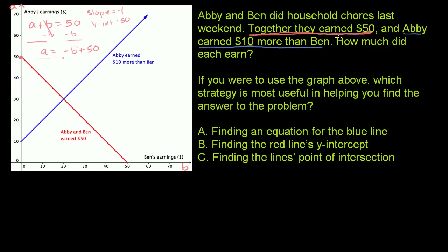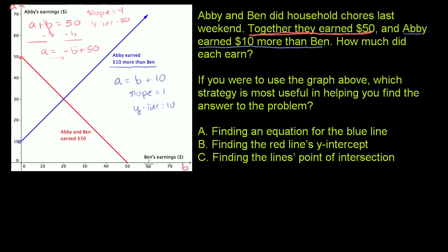Now the second statement: Abby earned $10 more than Ben. If we write that, that's saying Abby equals Ben's earnings plus $10. Here the slope is equal to 1 — there's an implicit 1 multiplying B — and the y-intercept is 10. They graph that here: y-intercept is 10 and slope is 1. You move 10 in the positive B direction, you move up 10 in the positive A direction. So this blue line represents all possible combinations of Abby and Ben's earnings if you only had the constraint that Abby earned $10 more than Ben. If Ben earns $0, Abby earns $10; if Ben earns $10, Abby earns $20; if Ben earns $60, Abby earns $70.